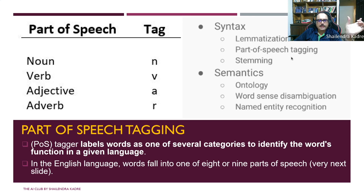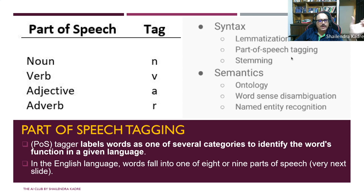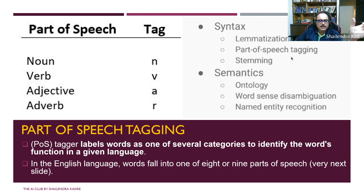A part of speech tagger labels a word as one of several categories to specify the word's function in the given language. It identifies what a word does — it can be a noun, verb, adjective, or adverb. In English, words fall into eight or nine parts of speech: noun, pronoun, verb, adverb, adjective, preposition, conjunction, and interjection. Explaining these is out of scope here as they are basic high school English — for preposition, conjunction, and interjection, it's advised to look them up.